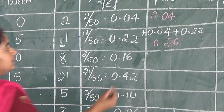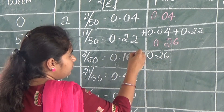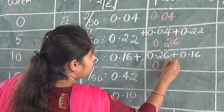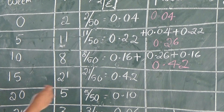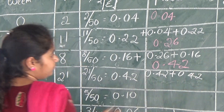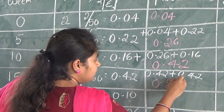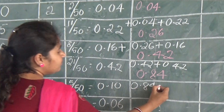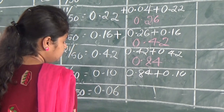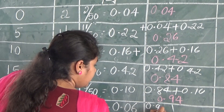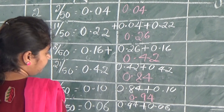For the third, 0.26 plus 0.16 equals 0.42. You have to add the previous probability. Next, 0.42 plus 0.42 equals 0.84. And next, 0.84 plus 0.10 equals 0.94. And then 0.94 plus 0.06 equals 1.